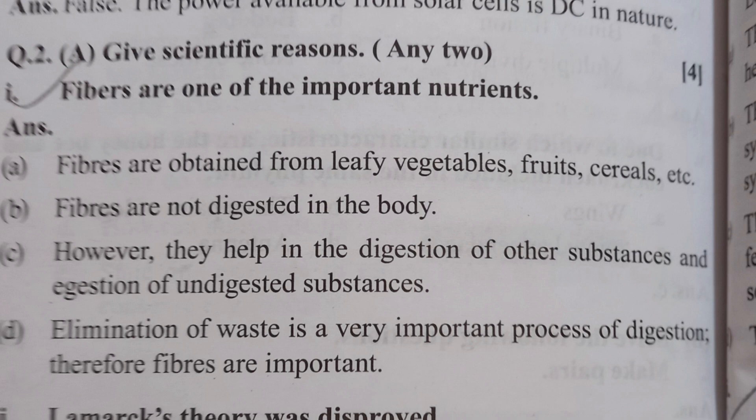First, I am going to give scientific reasons. Question number one: Fibers are one of the important nutrients. Answer: Fibers are obtained from leafy vegetables, fruits, cereals, etc. Fibers are not digested in the body; however, they help in the digestion of other substances and the elimination of undigested waste, which is a very important process of digestion.